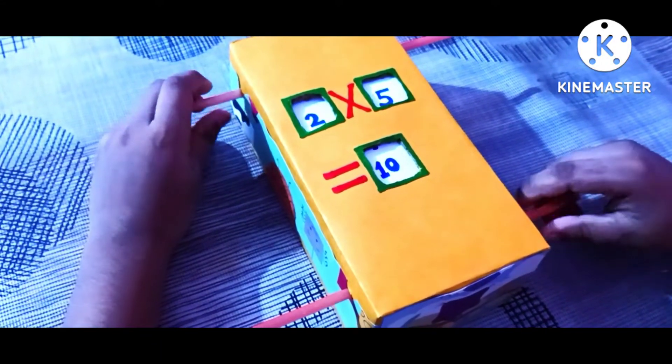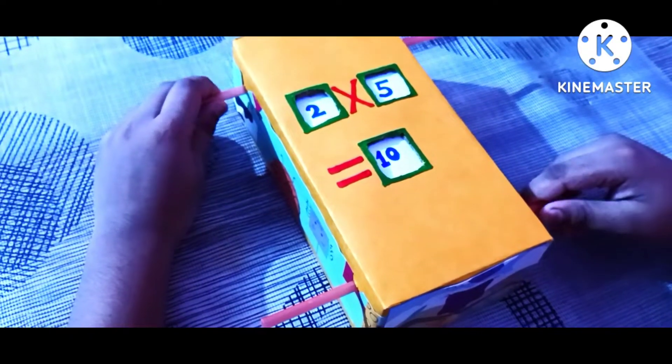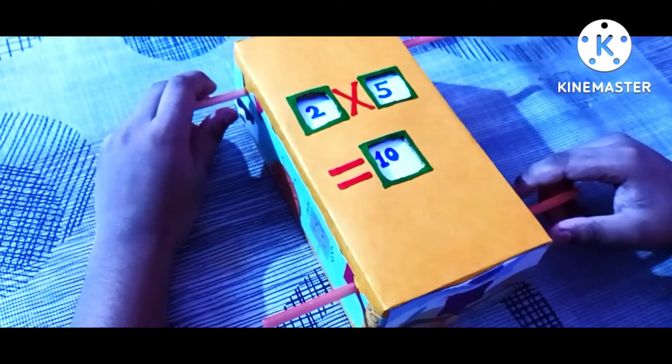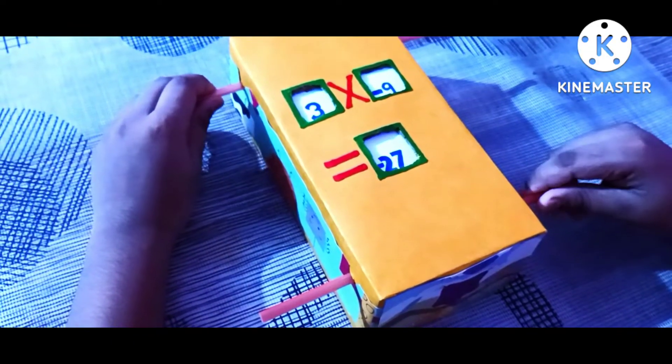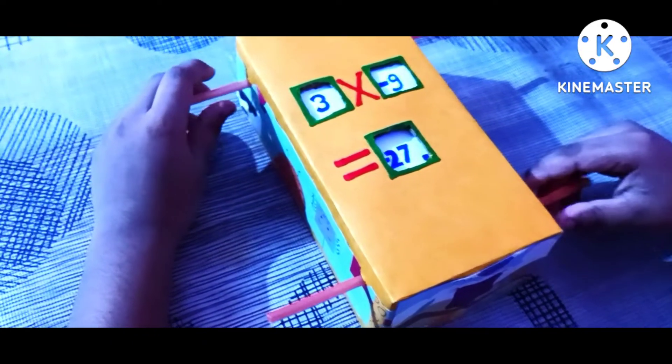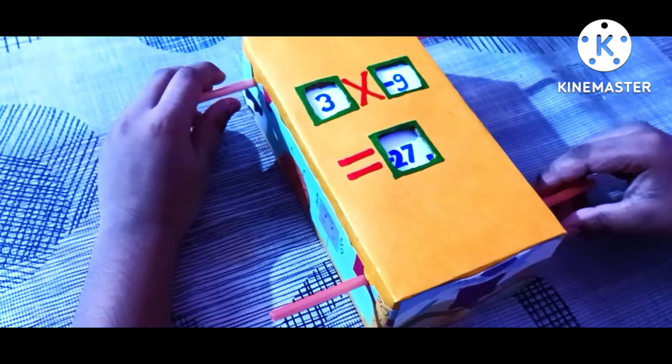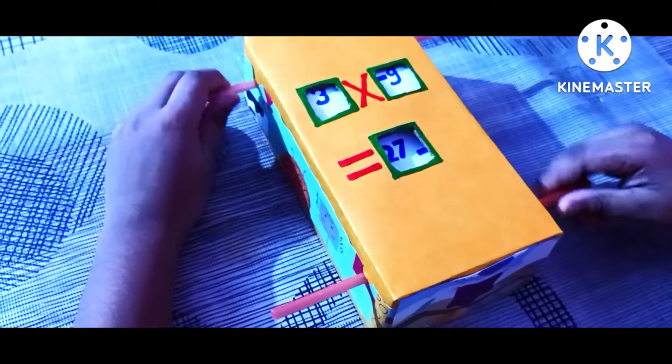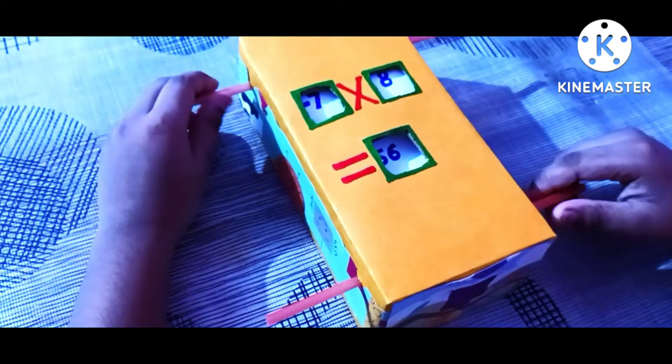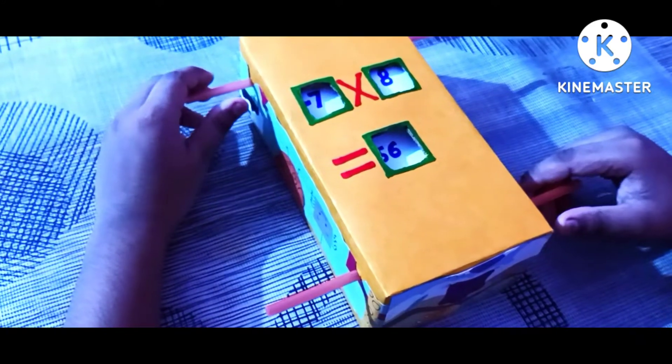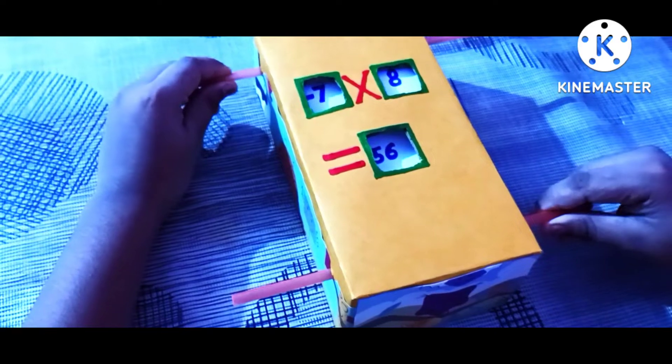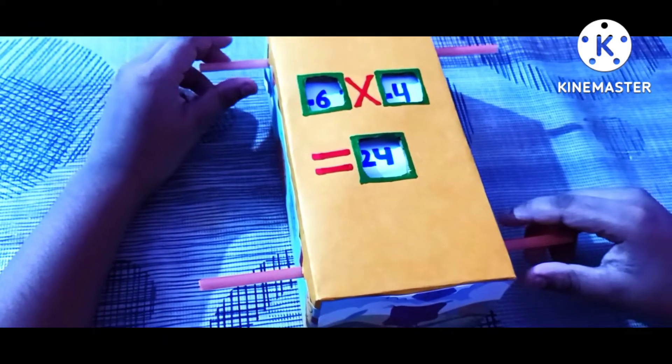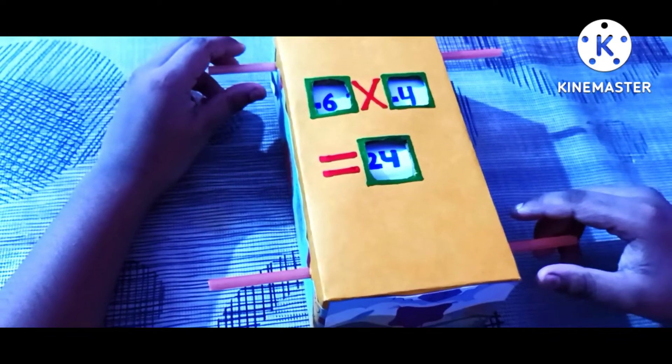And here are some examples. 2 into 5 is equal to 10. 3 into minus 9 is equal to minus 27. Minus 7 into 8 is equal to minus 56. Minus 6 into minus 4 is equal to 24.